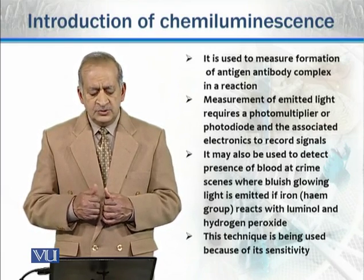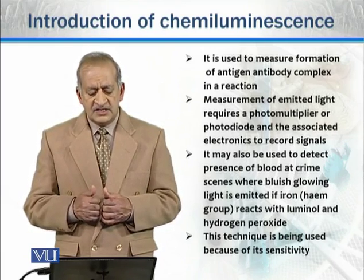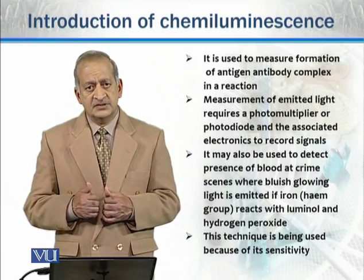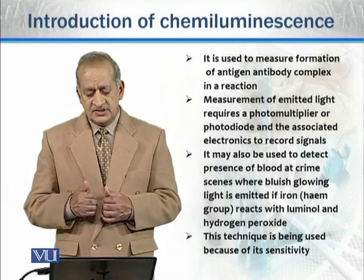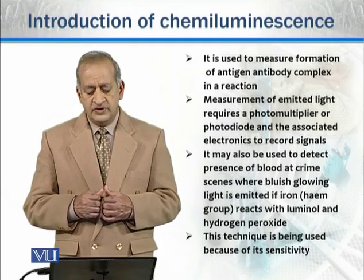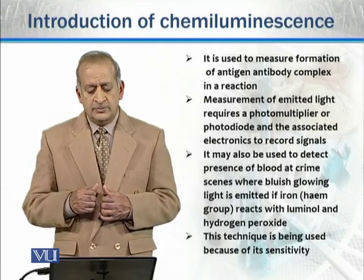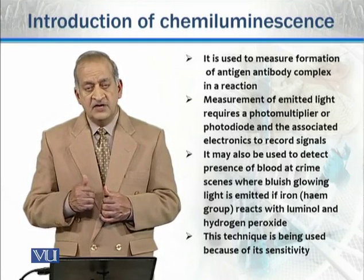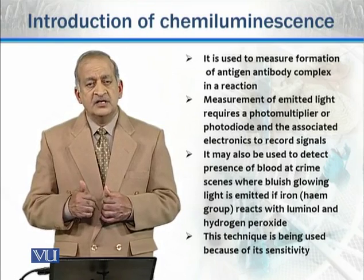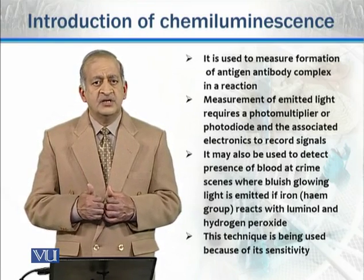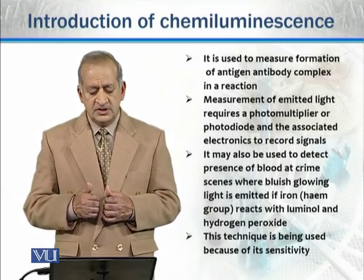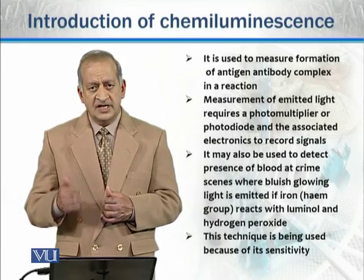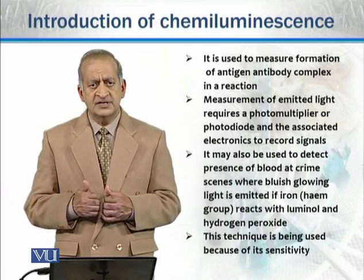Chemiluminescence is used to detect the presence of blood at crime scenes, where a bluish glowing light is emitted if iron present in the blood reacts with luminol and hydrogen peroxide.